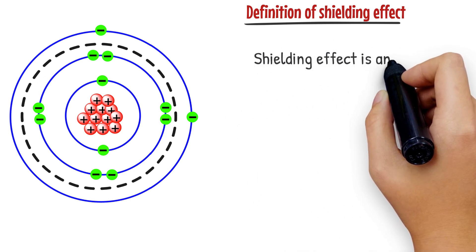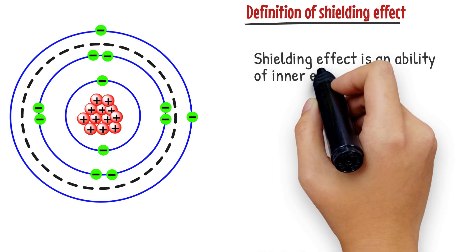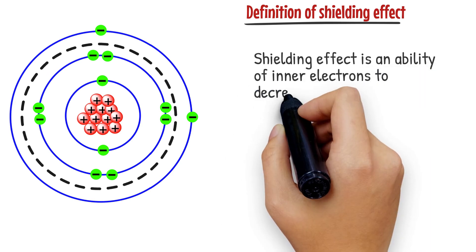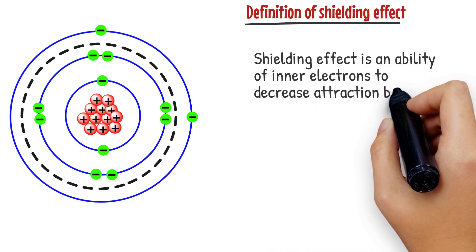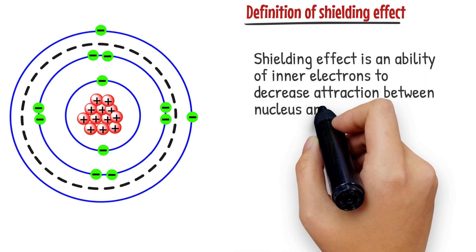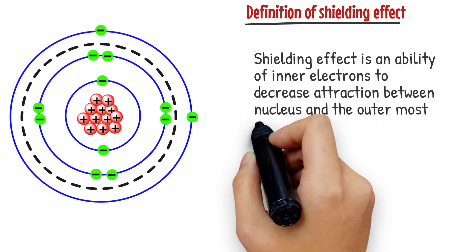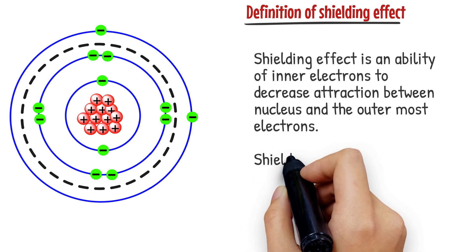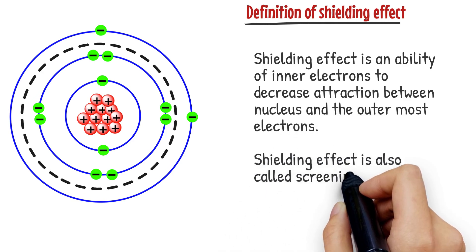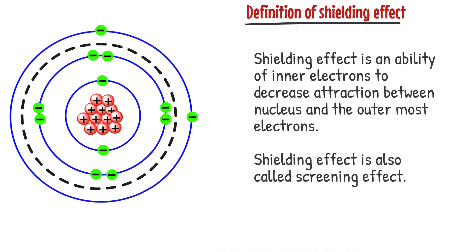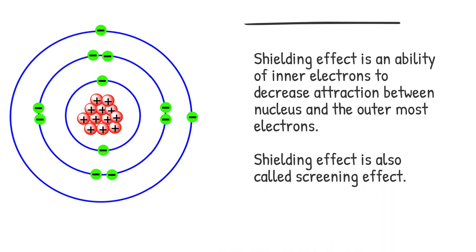Shielding effect is an ability of inner electrons to decrease attraction between the nucleus and the outermost electrons. Shielding effect is also called screening effect.